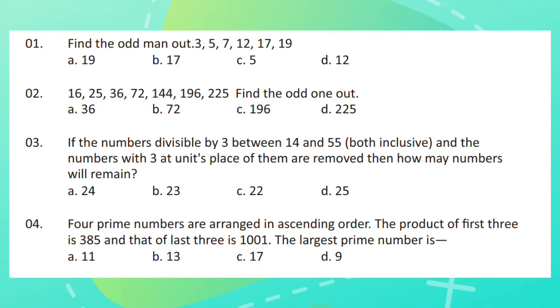Question 3. If the numbers divisible by 3 between 14 and 55 both inclusive and the numbers with 3 at units place of them are removed then how many numbers will remain?